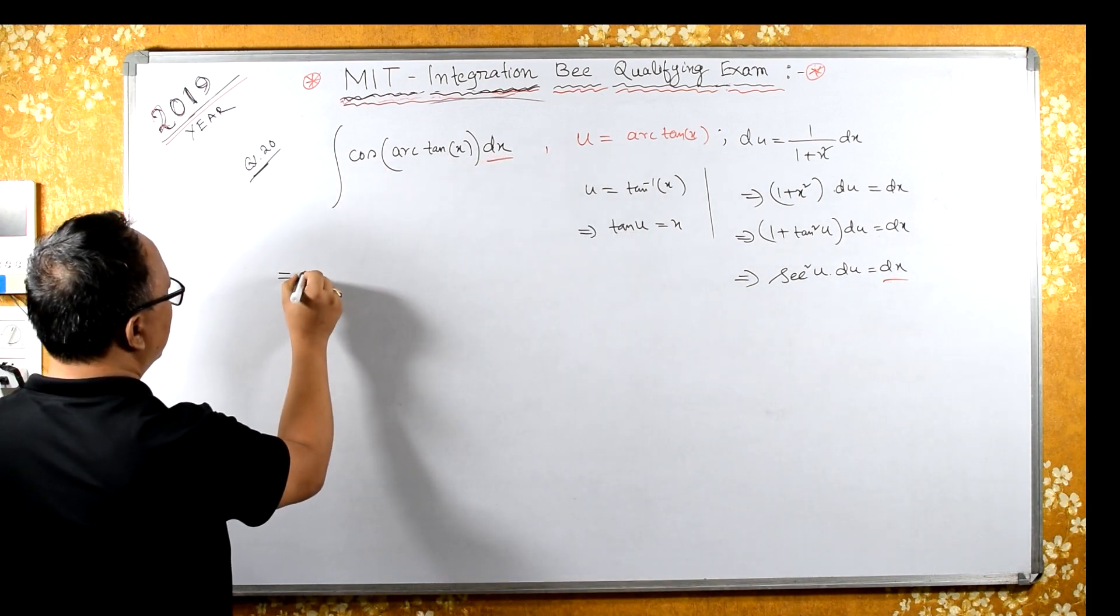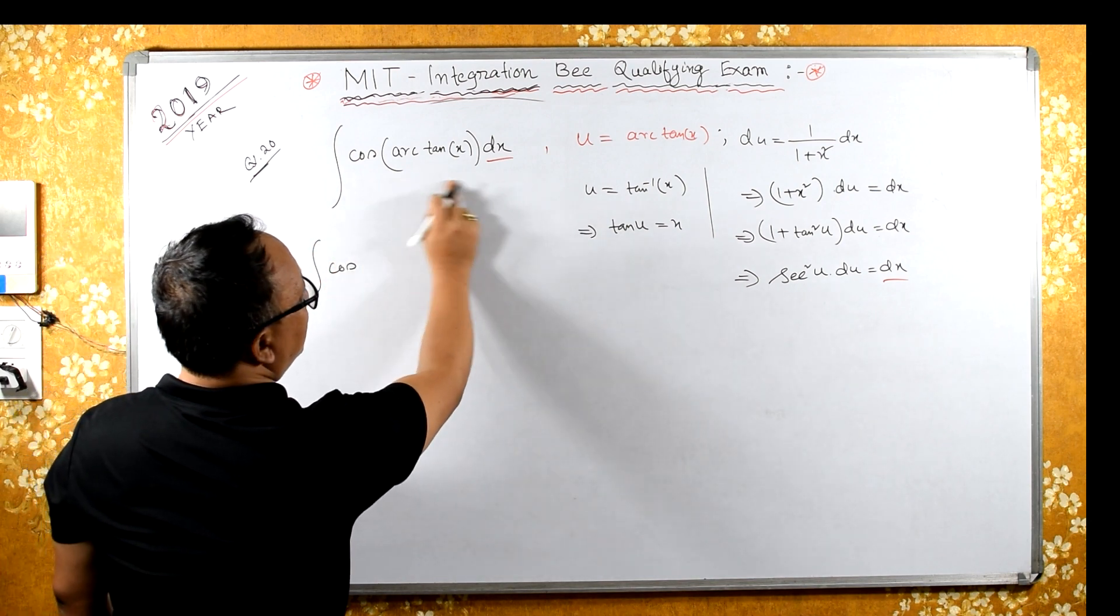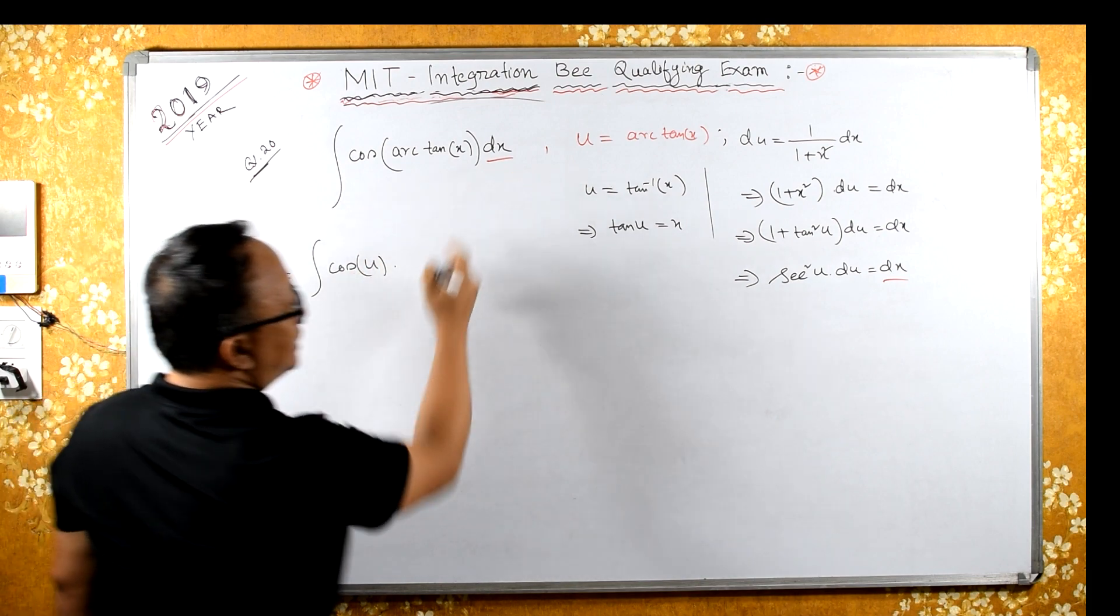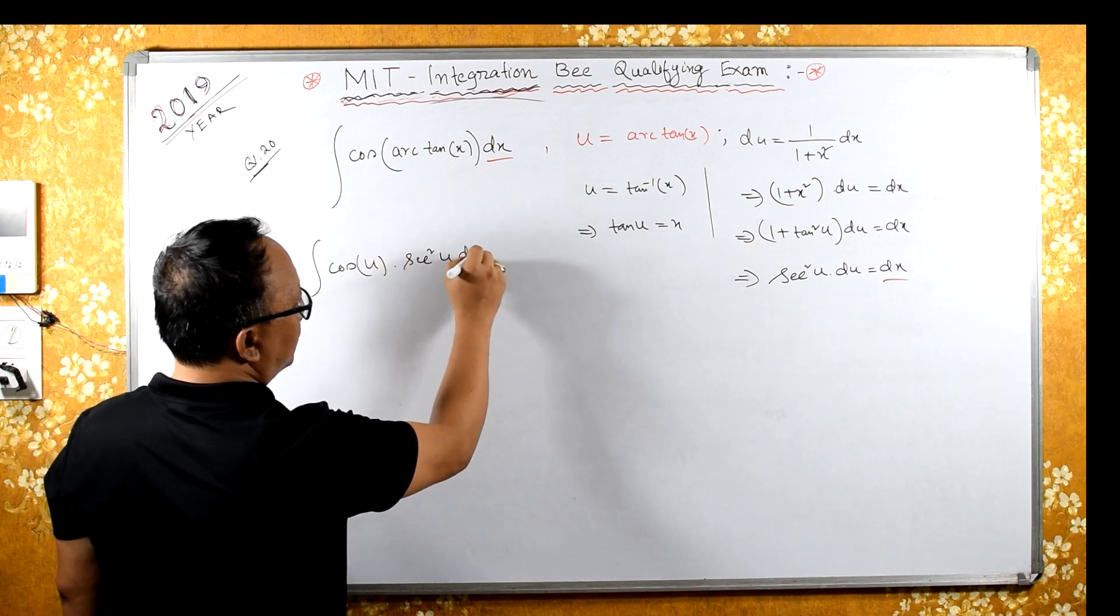This equals to integral cos of u, and dx is sec squared u du.